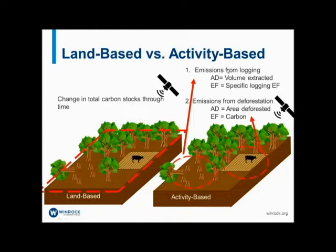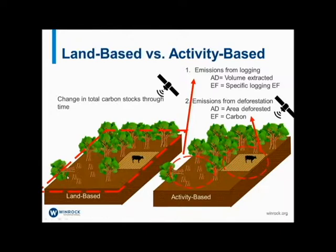It's worth stepping back to tackle the issue of land-based versus activity-based accounting approaches. A land-based approach looks at a total area, examining the total carbon stock at time one and time two — so the total stock across all trees and soil. The difference between time one and time two represents the emission resulting from both deforestation and degradation. On an activity-based approach, we look specifically at the activities — focusing on the area under which canopy has been lost, applying the emission factor representing the carbon stock of the forest before that area was cleared.